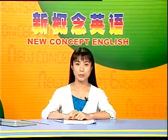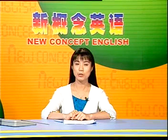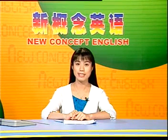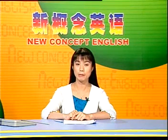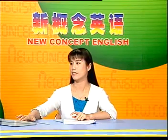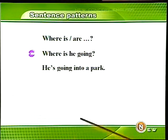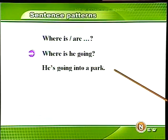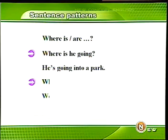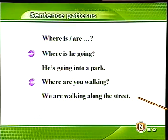好，看过课文的语言点之后呢，我们来总结一下今天学的基本句型是什么。在这课当中，我们学习的仍然是现在进行时，所不同的是和现在进行时连用的是一些介词短语，他们表示方向和位置。比如：他正走到公园里去，he is going into the park；我们正沿着街道散步，we are walking along the street.